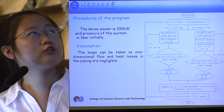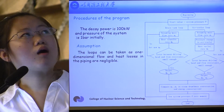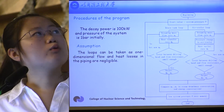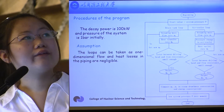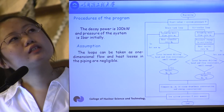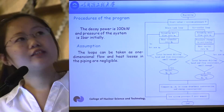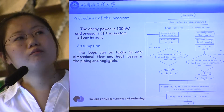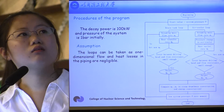Then I will talk about the procedures of the program. The known values are that the decay power is 100 kW and the system pressure is 1 bar initially. To simplify, assumptions are made that the loops can be taken as one-dimensional flow, and heat losses in the piping are negligible. There are three steps in the program. The first step is to calculate the parameters in the drain tank loop. By analyzing the natural circulation, parameters such as mass flow rate of condensate, mass flow rate of steam and water, and heat transfer rate are obtained.